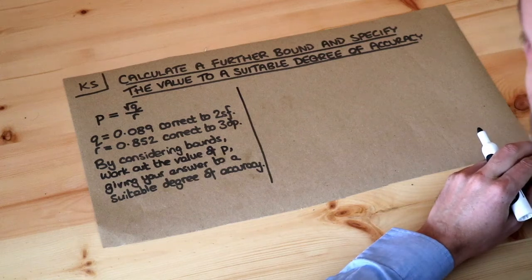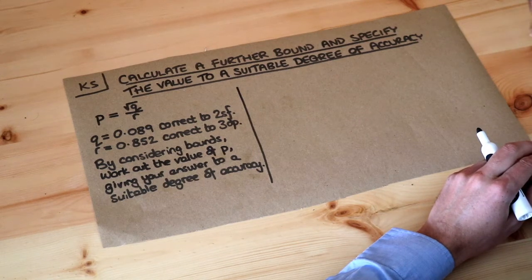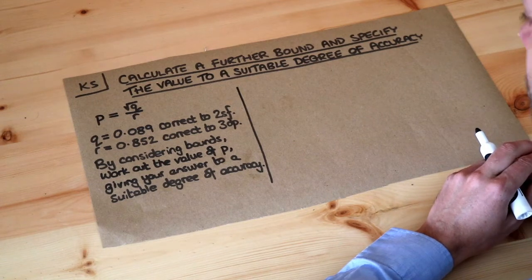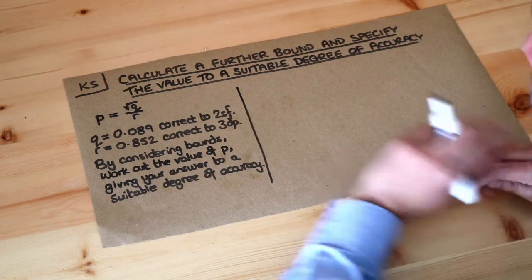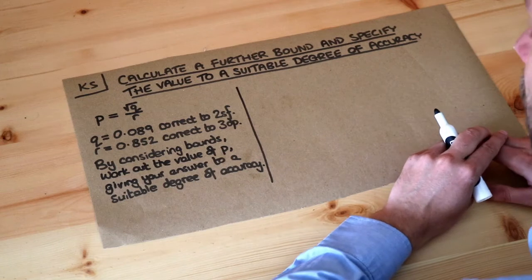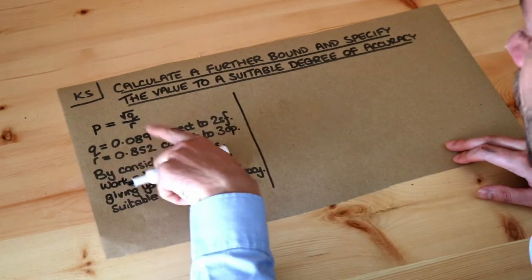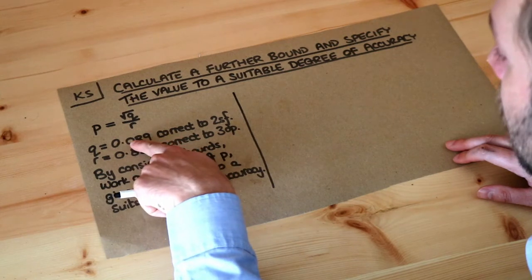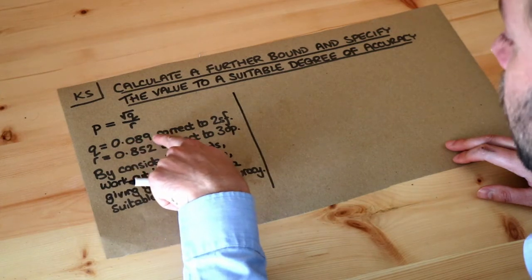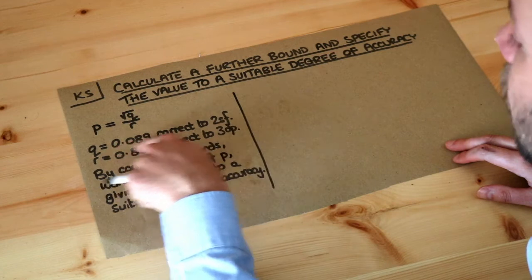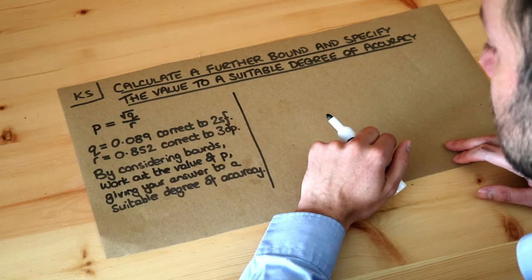Welcome to this Dr. Ross key skill video on calculating a further bound and specifying the value to a suitable degree of accuracy. We have the formula P equals root Q over R, and we're given the values of Q and R. We don't know the original value of Q, but we know that when Q is rounded to two significant figures we get 0.089.